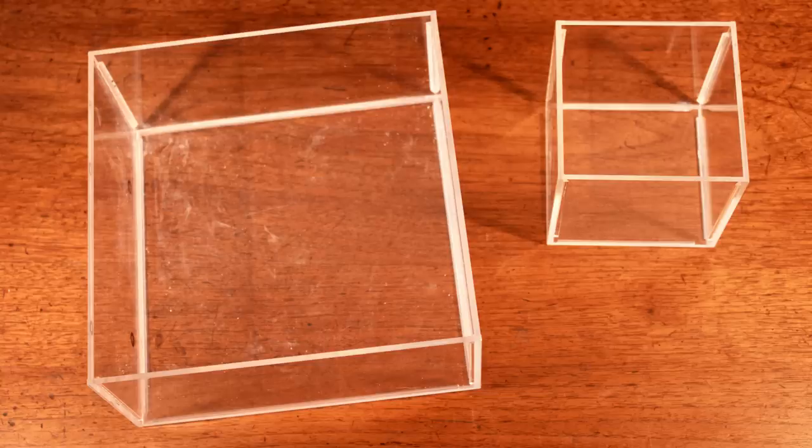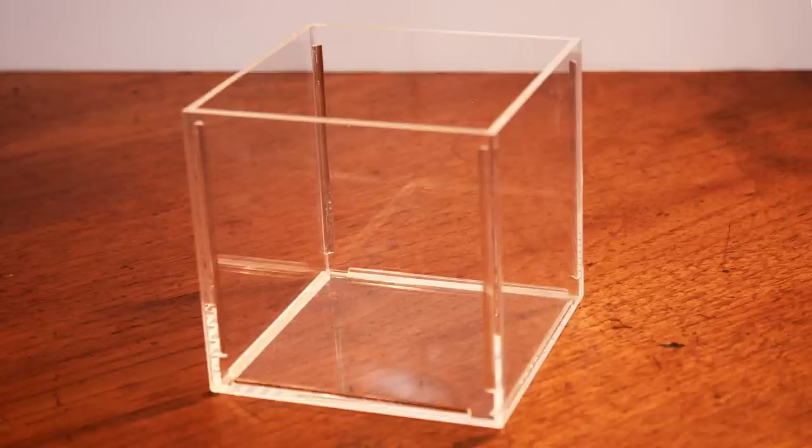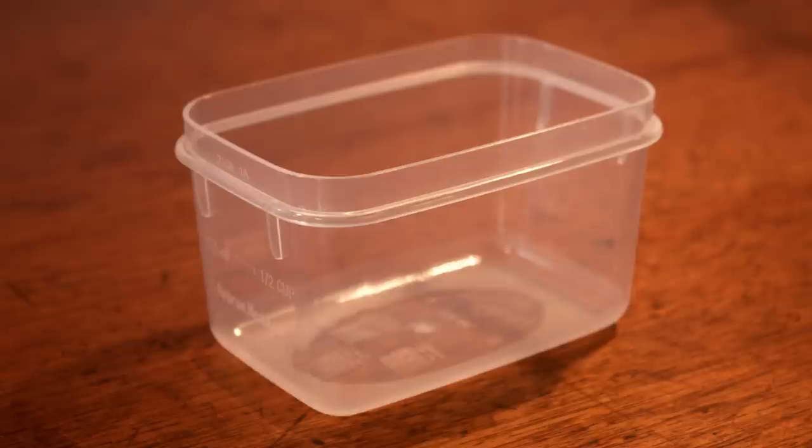First, let's focus on the foraging area. Any sort of container will do. Transparent ones made of glass or acrylic are best. You can usually find these sorts of containers at pet, aquarium, and kitchen supply shops.